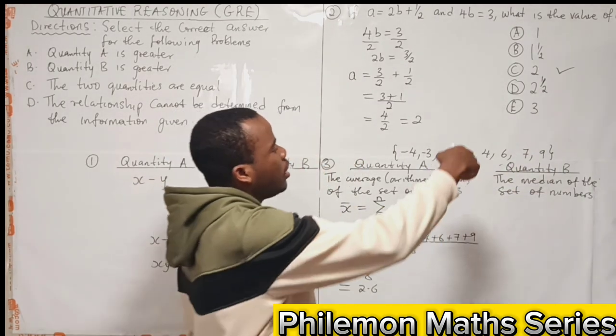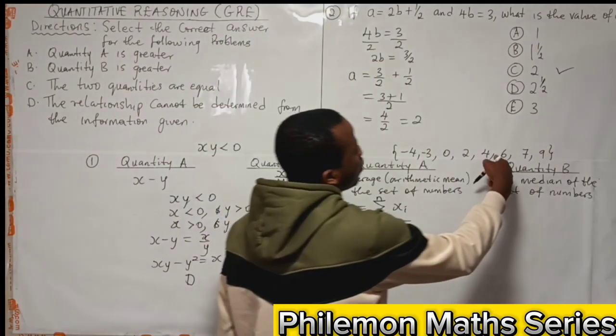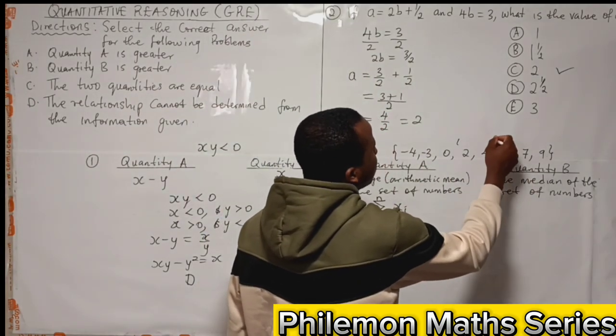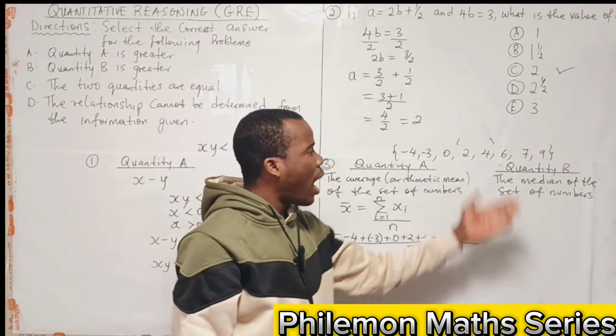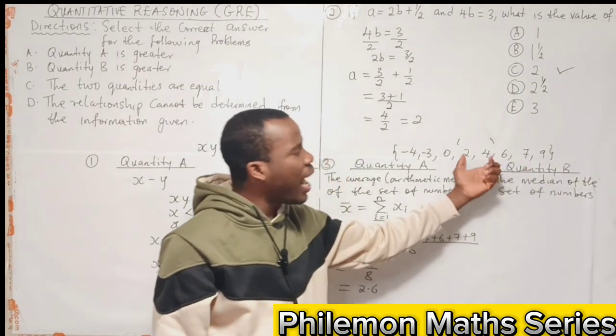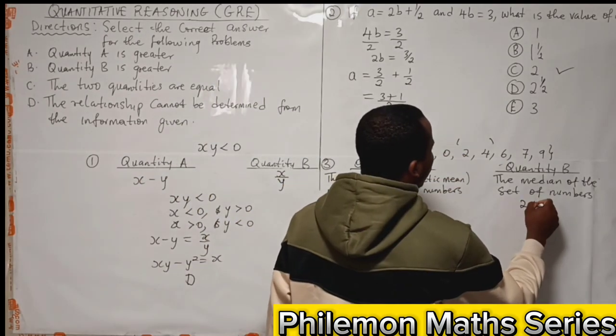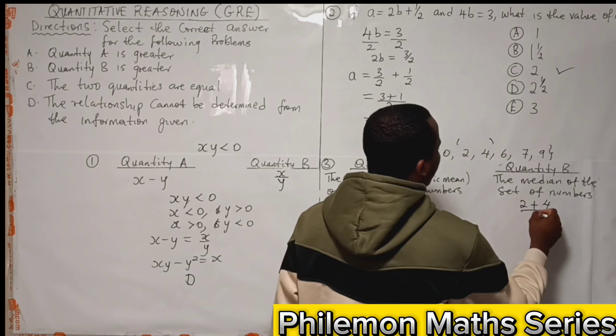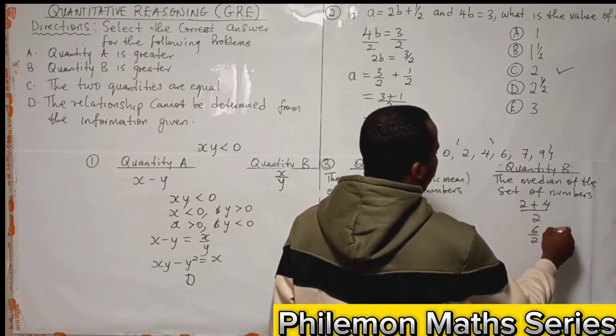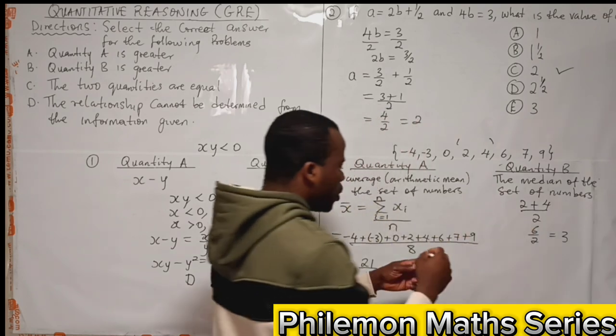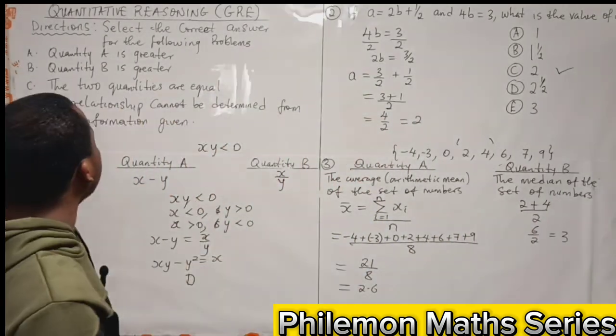Since we have 8 numbers, the middle numbers will be between the 4th and the 5th. The median will be the average of the 2 middle numbers, which will be (2 + 4)/2. 2 + 4 is 6 over 2, so we have 3.